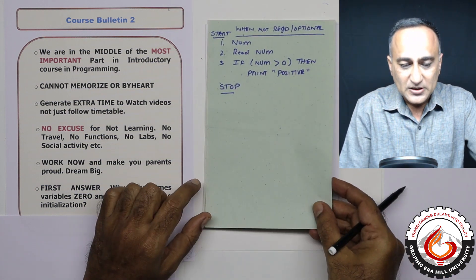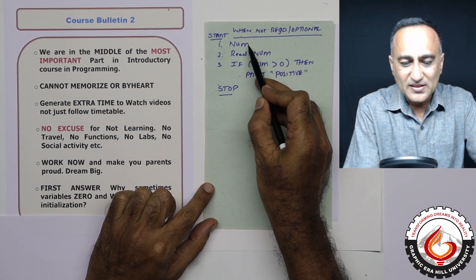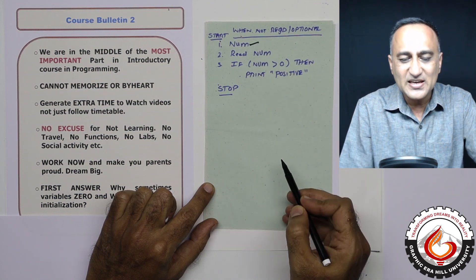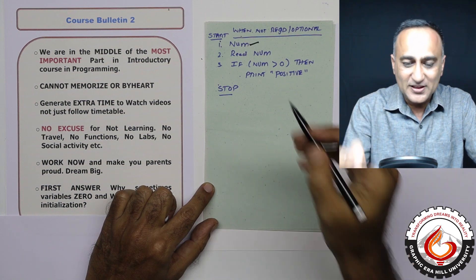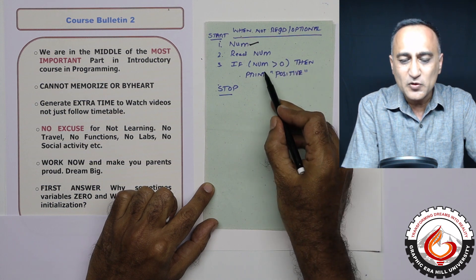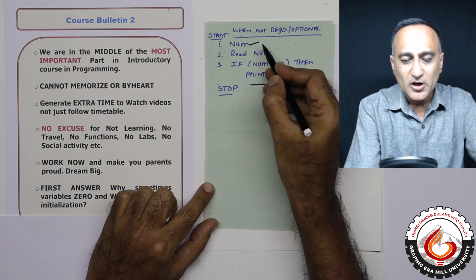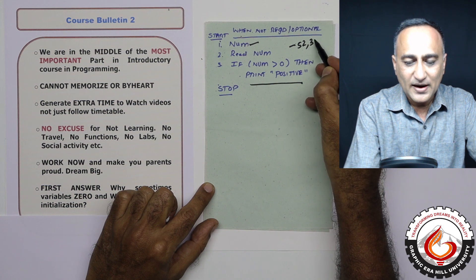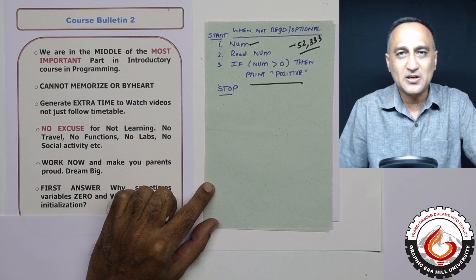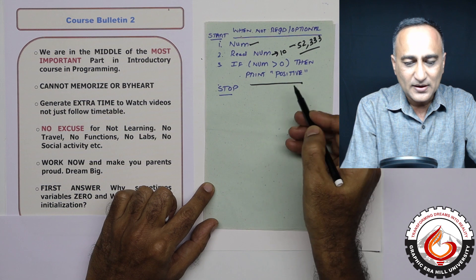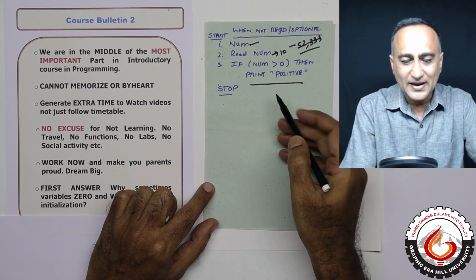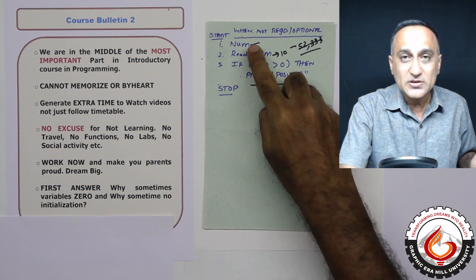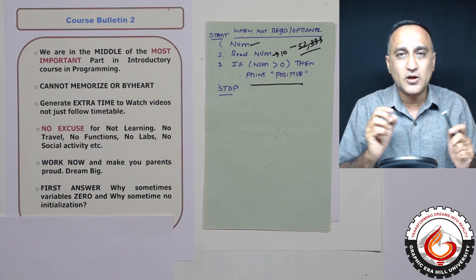One more example — when initialization is optional. Suppose I want to print whether a number is positive or not. Here I'm not initializing number to any value because I'm asking the user to enter the number. So once the user enters a number, if the number is greater than zero, I'm going to print positive. Even if number had a random value assigned by the machine, it doesn't matter because when you enter a value like 10, that value gets overwritten and the program runs perfectly. So I hope it's clear when you should give variables initial values and when it is optional.